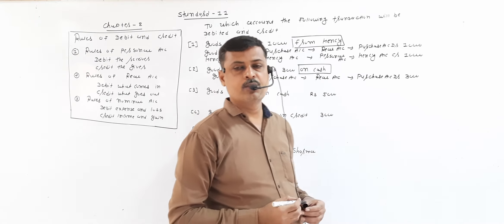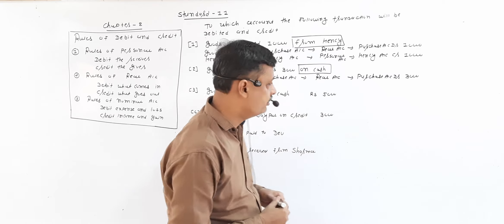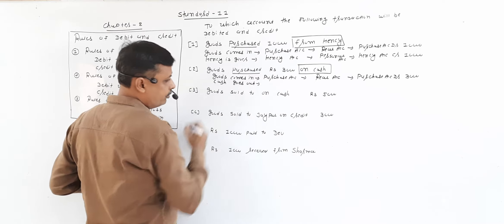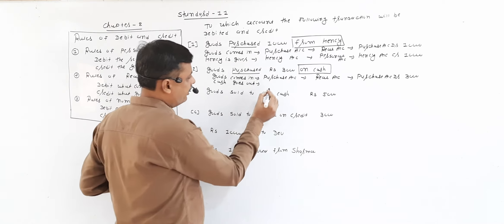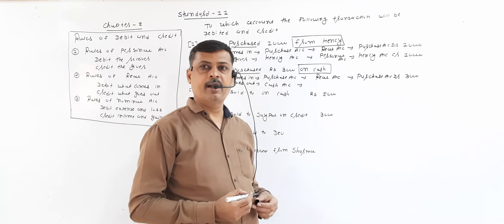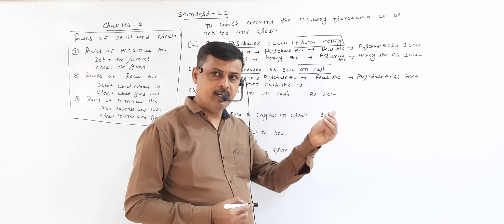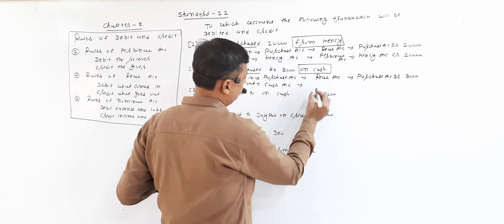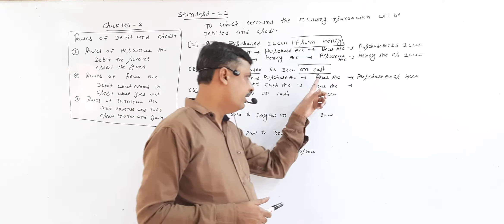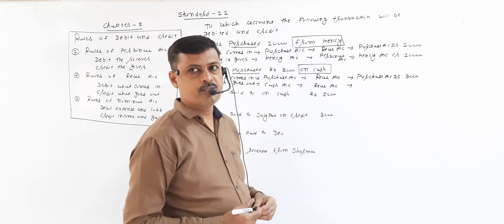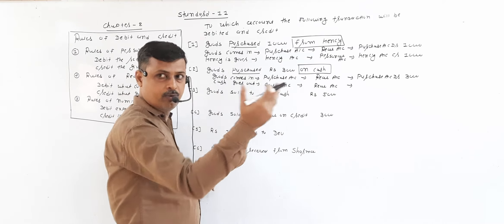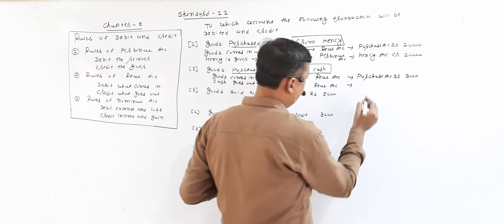This goods was purchased on cash. Whenever you purchase goods on cash, cash goes out. So cash account is affected. Cash is our asset, and all asset-related accounts are real accounts. As per real account: credit what goes out. Cash goes out, so cash account is credited Rs.3,000.